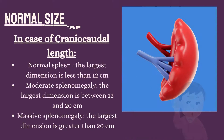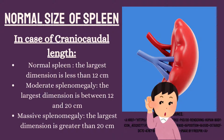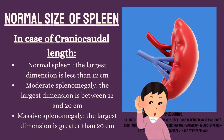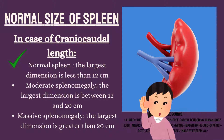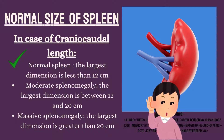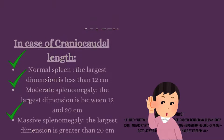What is the normal size of the spleen? In terms of craniocaudal length: for a normal spleen, the largest dimension is less than 12 centimeters. For moderate splenomegaly, the largest dimension is between 12 and 20 centimeters. For massive splenomegaly, the largest dimension is greater than 20 centimeters.